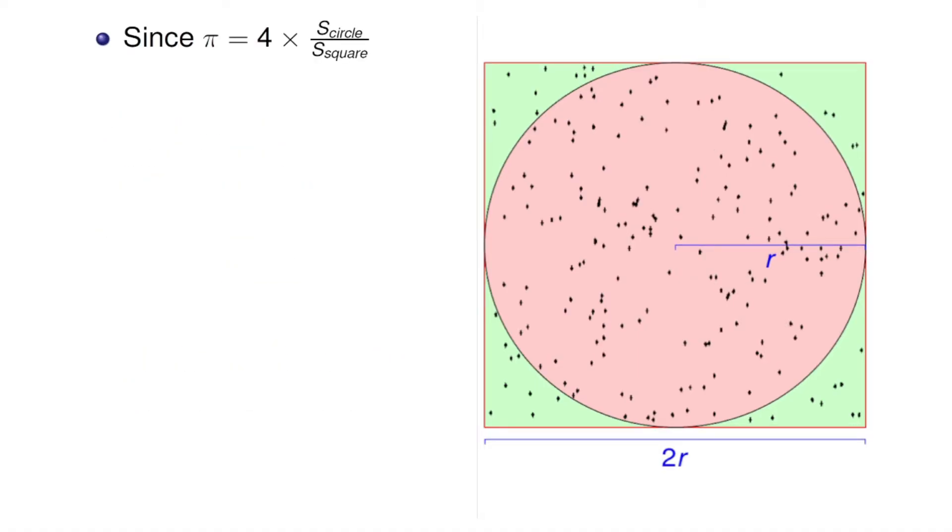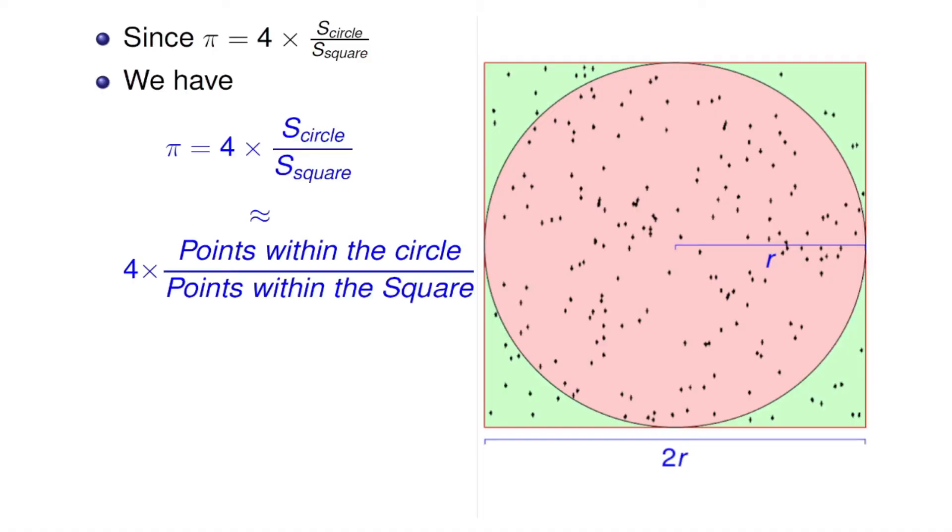Now since pi equals 4 times S_circle over S_square, we have the following approximation: pi approximately equals 4 times the number of points within the circle over the number of points within the square.